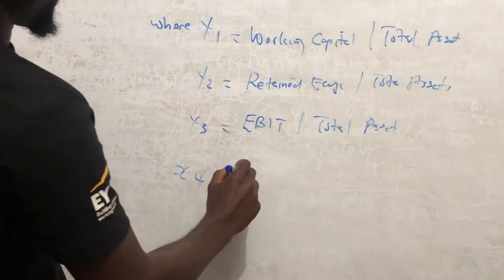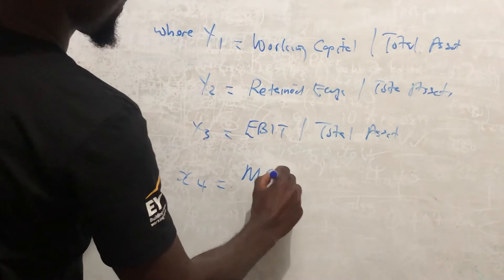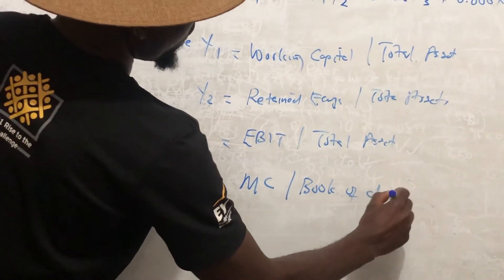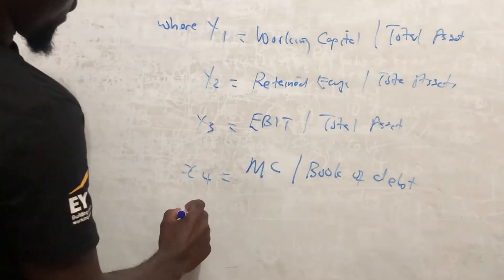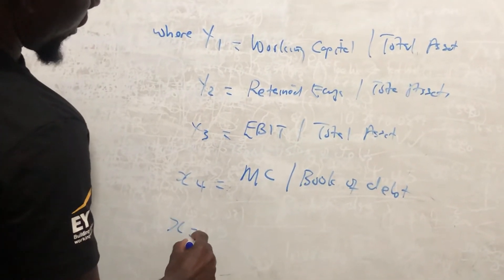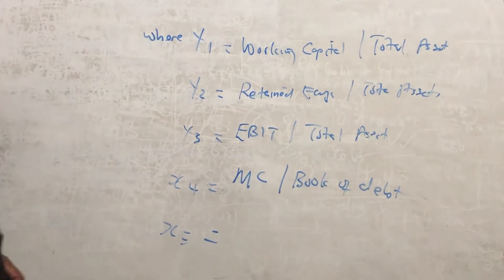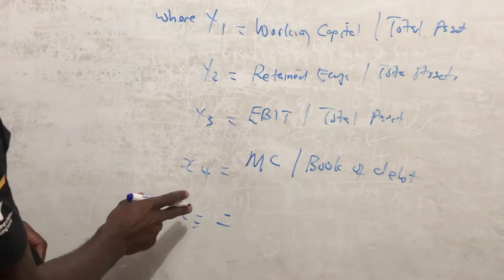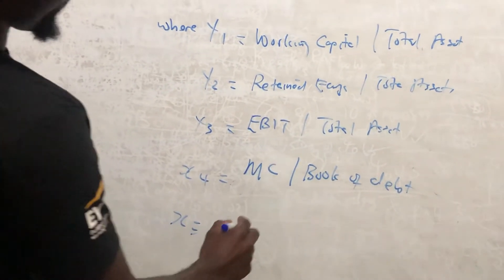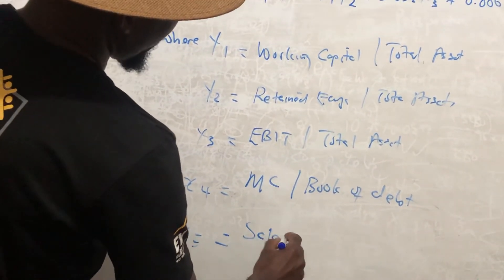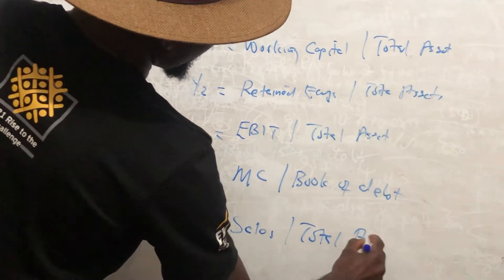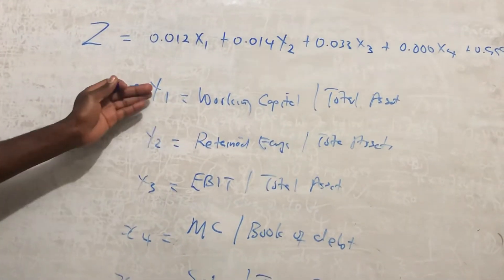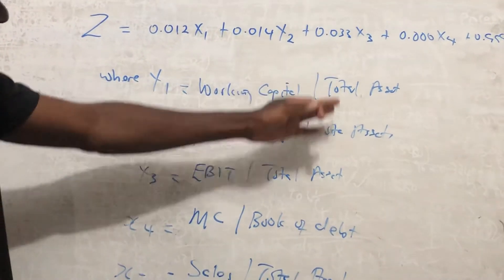X4 is equal to market capitalization over book value of debt, and X5 is equal to sales over total assets. As you can see, X1, X2, X3, and X5 are all divided by total assets, making X4 the odd one out.